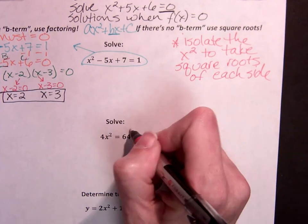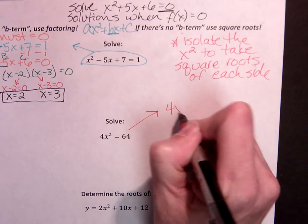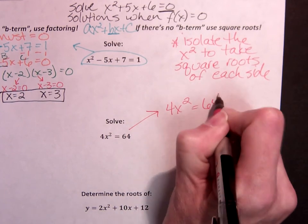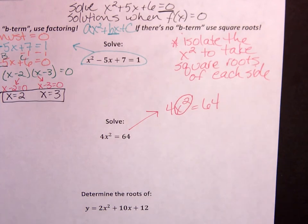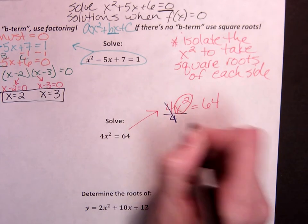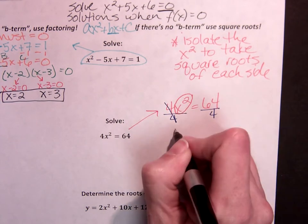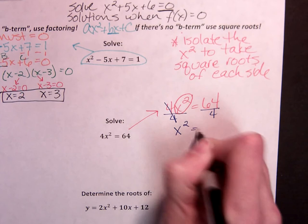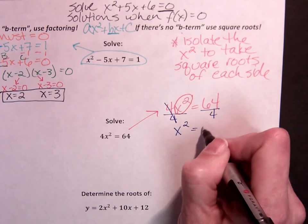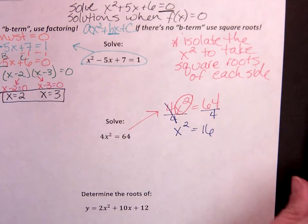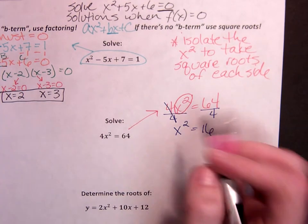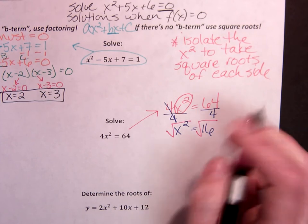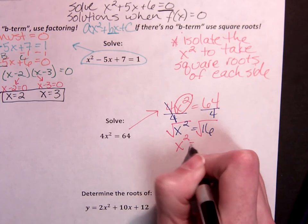So when I look at 4x squared equals 64, I need to get this x squared term isolated. I'm going to divide by 4 to get those to cancel. And this says x squared equals 64 divided by 4 is 16. Now that I have the x squared by itself, take the square root of both sides.